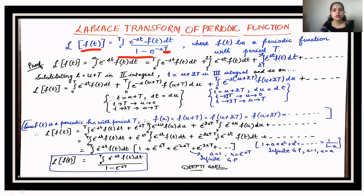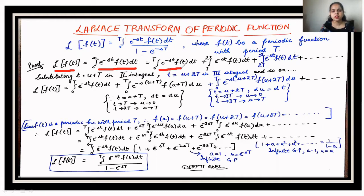Now let us discuss the proof — how this formula has been derived. We know that the Laplace of a function is defined as the integral from 0 to infinity of e^(-st) f(t) dt. We can break this into parts depending on the period T: the first part is 0 to T, the next is T to 2T, then 2T to 3T, and so on up to infinity.